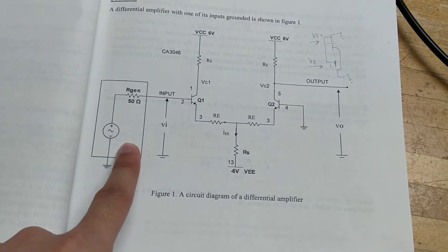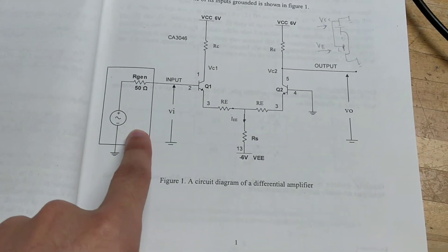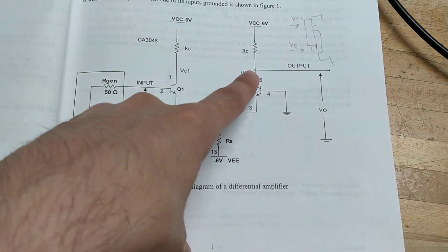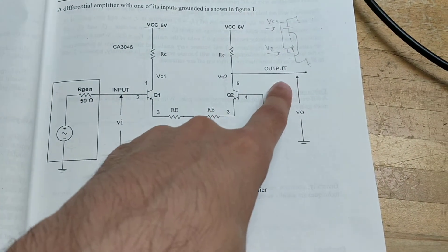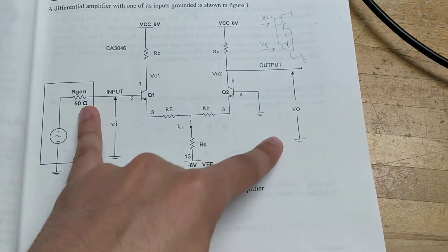I have the function generator in with 100 millivolts peak to peak and then I have oscilloscope probe measuring the output as well as the input.